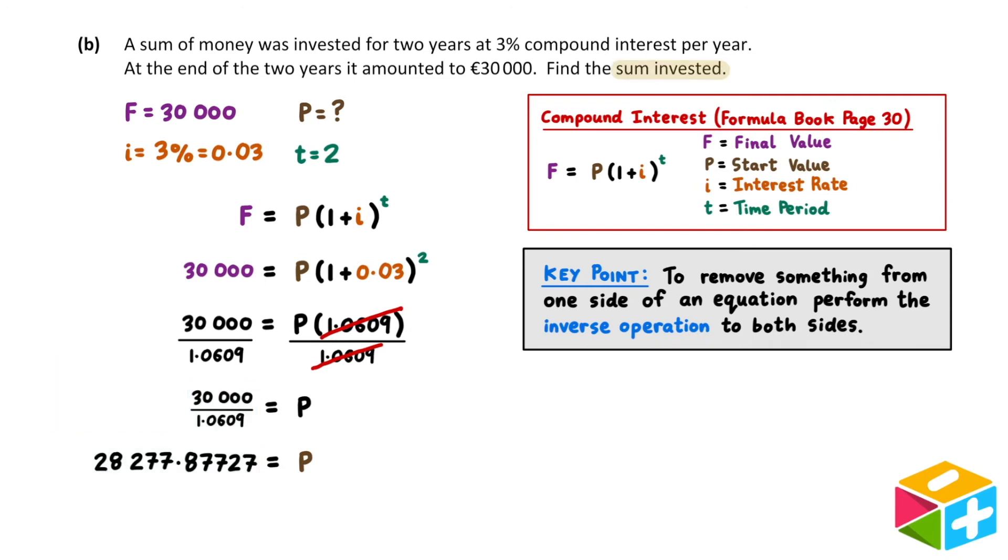Our answer here represents the sum of money invested, so our unit is the euro. And by convention, we round euro amounts to two decimal places. This gives us a final answer of €28,277.88.